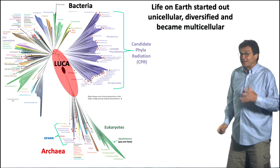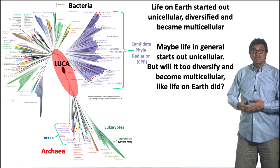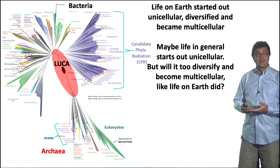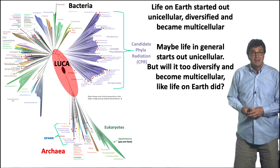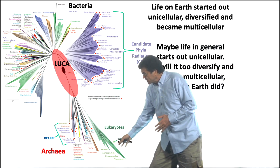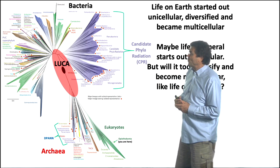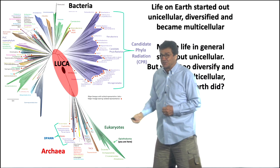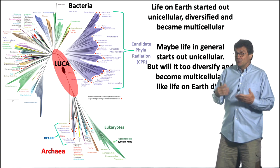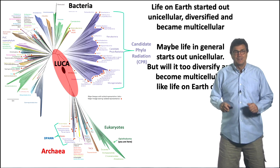The question we're going to talk about today is: maybe life in general starts out unicellular — and life in general means life on other planets — will it too diversify and become multicellular, like life on Earth did? Remember, life on Earth became multicellular only along one lineage, but it stayed unicellular in all its different wonderful ways along these other lineages. So life didn't just become multicellular; it also stayed unicellular, and filamentous, and lots of different kinds of simple multicellularities.